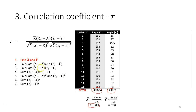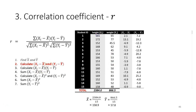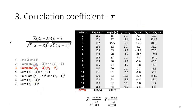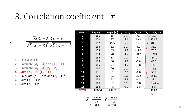The next step is to calculate the deviation by subtracting each observation from the respective mean. For example, we minus 161 cm with 158.9 cm to get 2.1. We do this for the first variable and also the second variable. After that, we calculate the square cross product by multiplying the deviation of the first variable with that of the second variable, then sum all the values to get the sum of square cross products — the first element in the correlation coefficient formula.